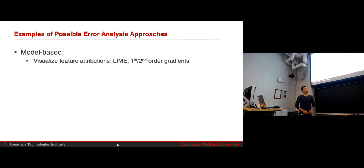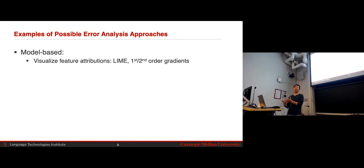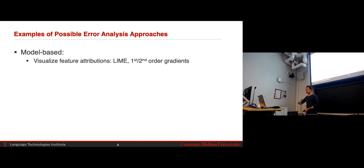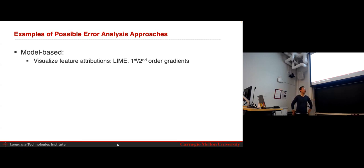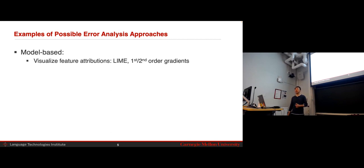Another general way is to start from the model. Instead of starting from the data and seeing which data points the model got correct or incorrect, look at what the model was doing internally when making predictions. One approach is visualizing feature attribution — seeing which particular parts of the input the model was focusing on when making a prediction. This can be done using methods based on first and second order gradients. In the whole field of interpretable or visualizable machine learning models, there are ways of looking at what the model is focusing on and whether that agrees with what you expect.